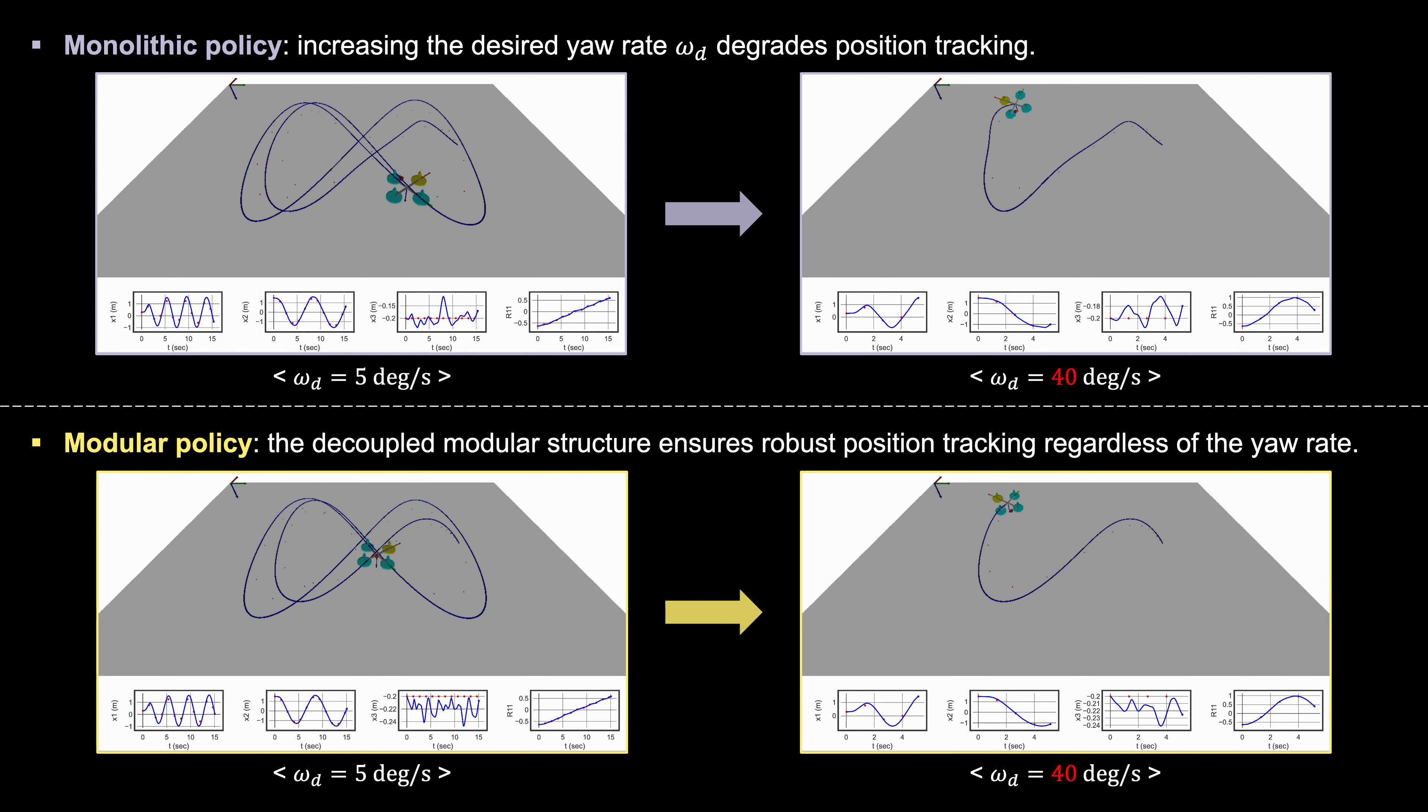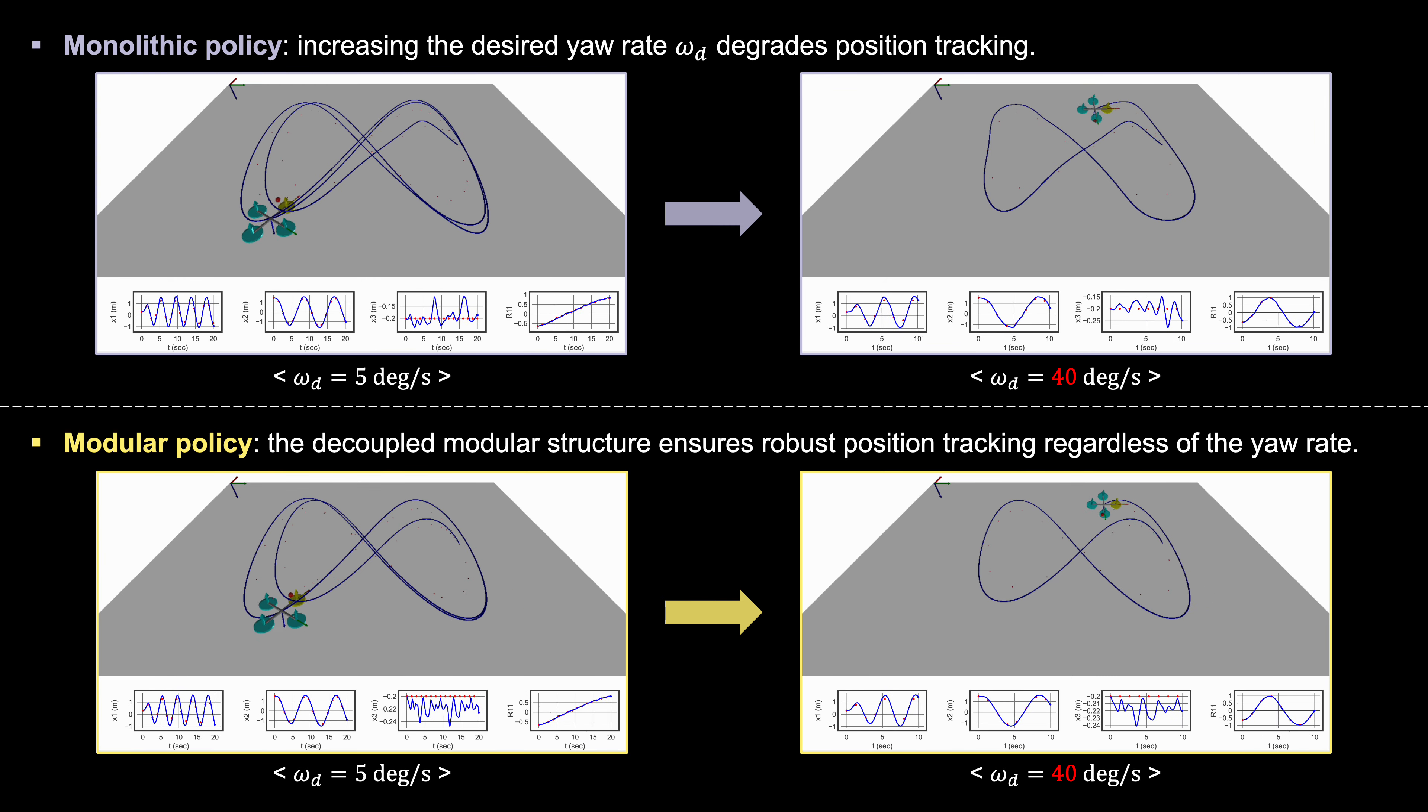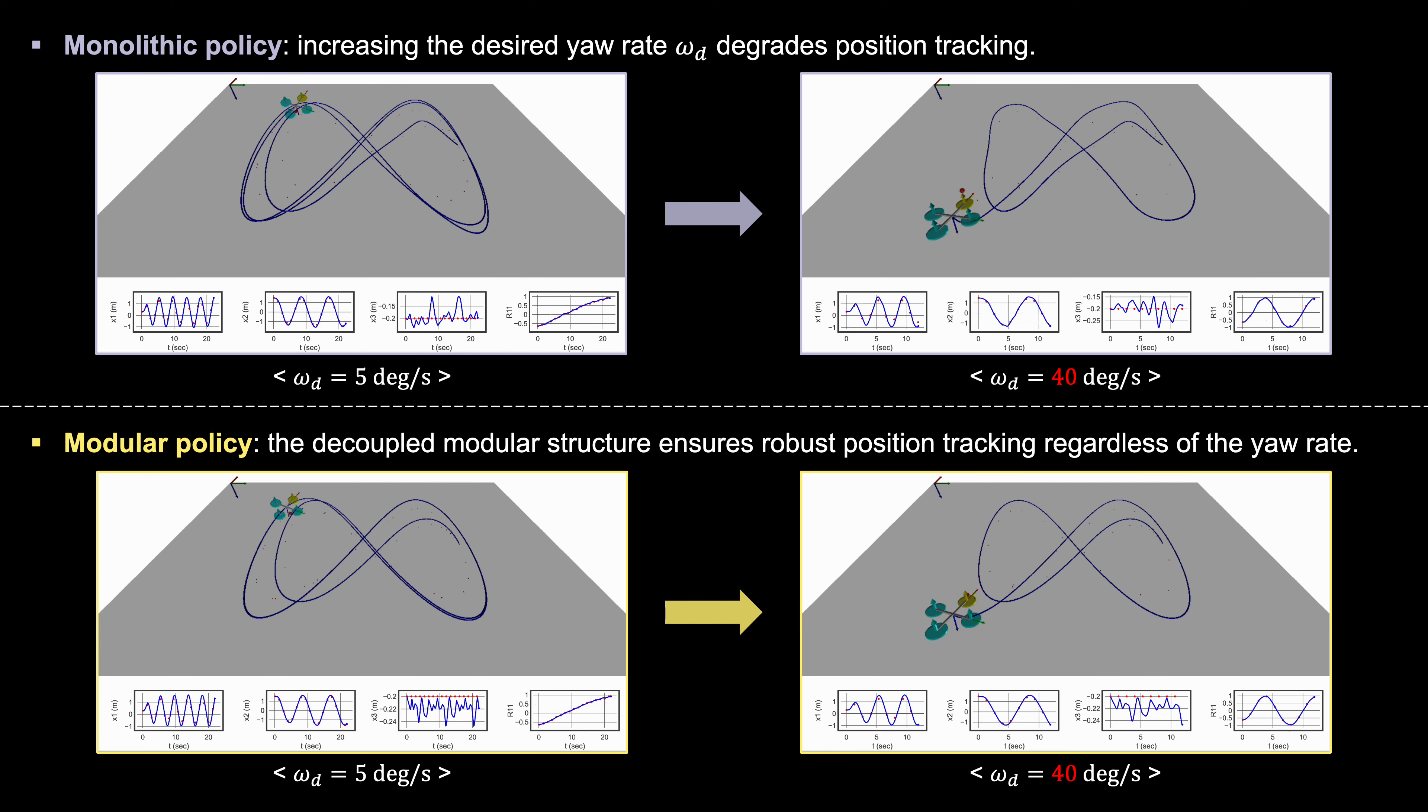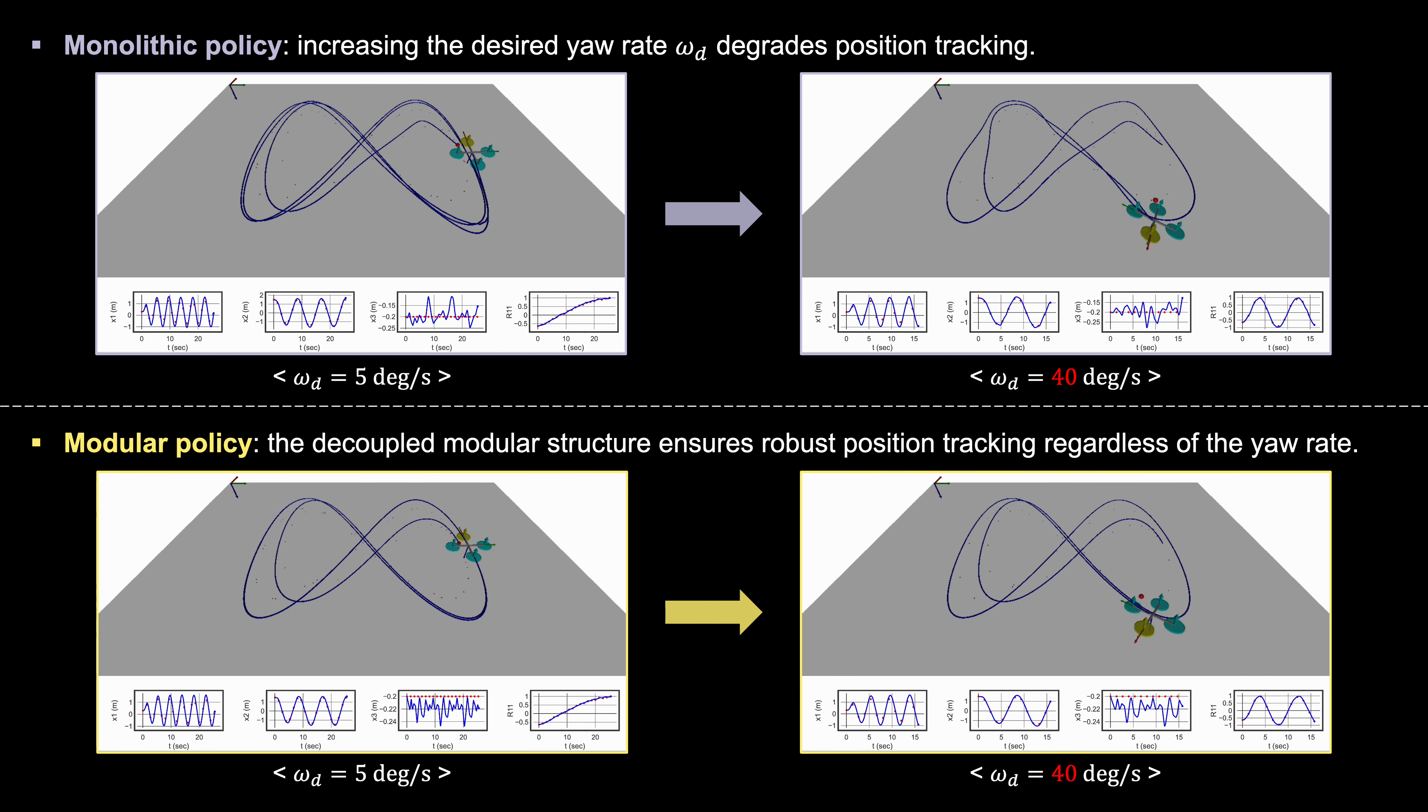The performance of the monolithic policy degrades due to its tightly coupled nature. On the other hand, our modular policies maintain robust position tracking regardless of yaw rates, highlighting the benefits of a decoupled approach.